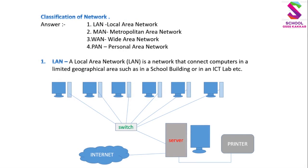First, LAN. A local area network is the network that connects computers in a limited geographical area, such as in a school building or in an ICT lab. Local Area Network एक ऐसा network है जो computers को एक सीमित भौगोलिक क्षेत्र के अंतर्गत जोड़ता है। जैसे एक स्कूल की building या एक ICT lab में रखे हुए 10-12 computers को आपस में जो नेटवर्क से जोड़ते हैं उसे Local Area Network कहते हैं।